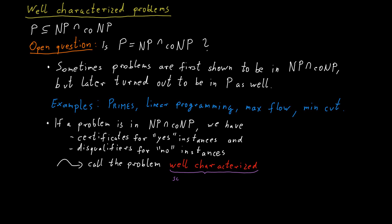Often, having a good characterization of the problem — meaning having certificates as well as disqualifiers — means we've understood something about the problem, and this often allows new insights into the problem, which eventually might lead to the discovery of a polynomial time algorithm.